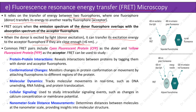For FRET to occur, the fluorophores must be close enough — typically less than six nanometers. Common FRET pairs include Cyan Fluorescent Protein (CFP) as the donor and Yellow Fluorescent Protein (YFP) as the acceptor. As shown in the diagram, when CFP and YFP are more than six nanometers apart, there is no energy transfer and CFP shows a normal photoactivation reaction. When the distance is less than six nanometers, CFP emits light that causes excitation of YFP.